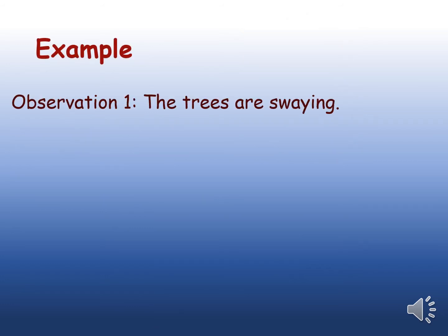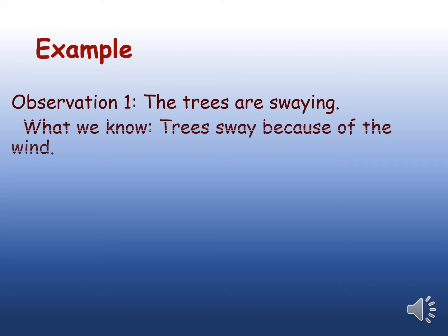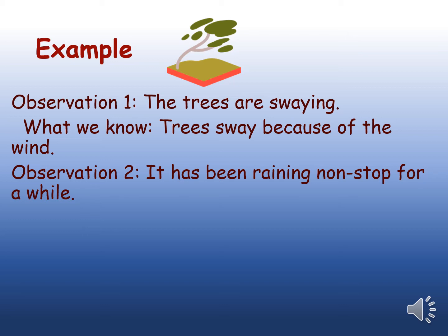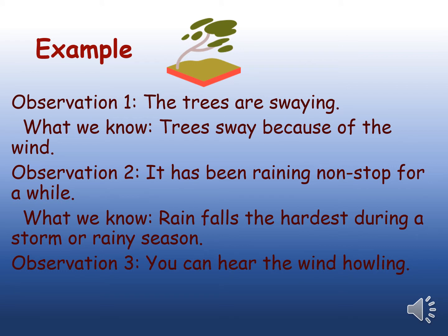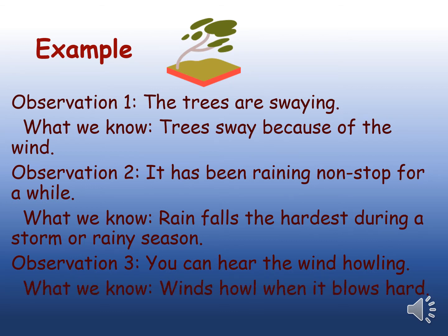Example: You observed that trees are swaying. We know that trees sway because of the wind. You also observed that it has been raining nonstop for a while. We know that rain falls the hardest during a stormy or rainy season. Third observation: you can hear the wind howling. We know that winds howl when it blows hard. So what do you think is happening? We can guess that there is a storm.